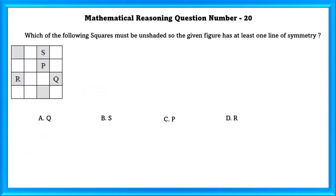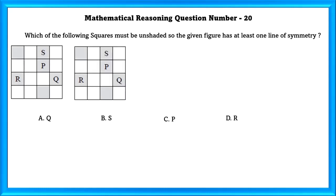Mathematical reasoning question number 20: Which of the following squares must be unshaded so that the given figure has at least one line of symmetry? The answer is P.